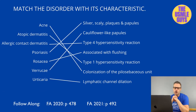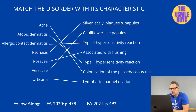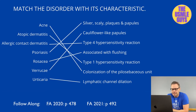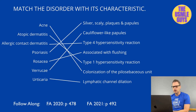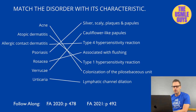Urticaria is simply hives. This leads to the formation of itchy wheals that develop as a result of mast cell degranulation. Superficial dermal edema and lymphatic channel dilation are characteristic findings. Let's move on to our next and final matching exercise for the lecture — hit that pause button and come on back when you think you've got the right answers.